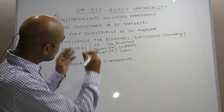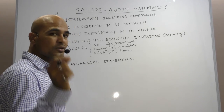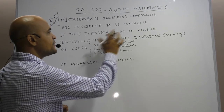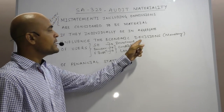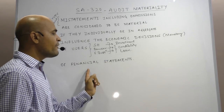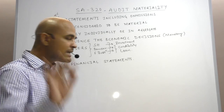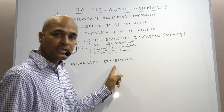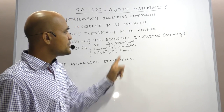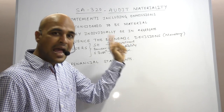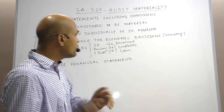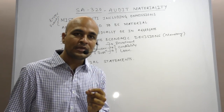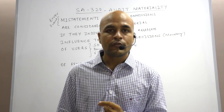Coming back to the whole definition: there is some error, fraud, or omission which individually or in aggregate influences the economic decision of users of financial statements. If these three conditions are satisfied — users are using the financial statements, taking economic decisions, and those decisions are influenced by an error, fraud, or omission — then such information will be termed as material information.